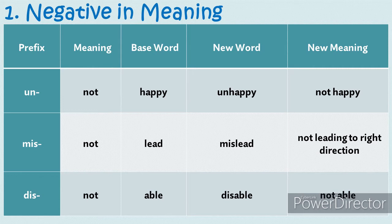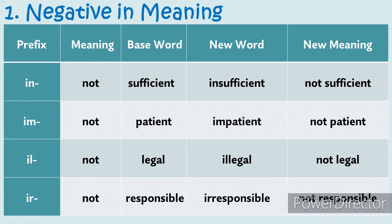Another prefix here is dis-, which also means not. When added to the base word able, the new word becomes disable, with a new meaning: not able. In- also means not. When added to the base word sufficient, it becomes insufficient, with a new meaning: not sufficient. Another prefix is im-, which also means not. When added to the base word patient, it forms impatient, with a new meaning: not patient. Ill- also means not. When added to the word legal, the new word is illegal, meaning not legal. Ir- is also a prefix meaning not. When added to the base word responsible, it becomes irresponsible, which means not responsible.